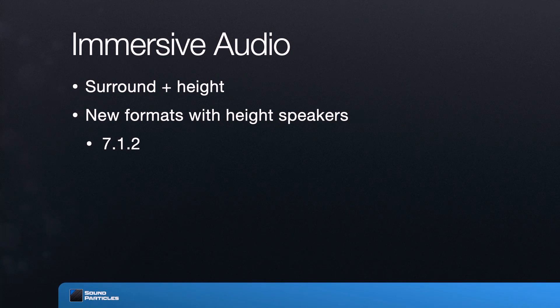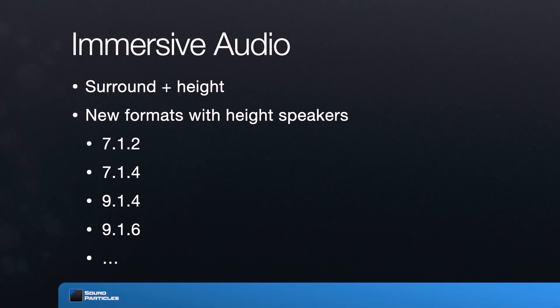We started with stereo — sound image in the front — then moved to surround with sound on the sides, back, and front. The next step is immersive audio. When people talk about immersive, 3D, or spatial audio, they mean surround with a height component — not only speakers around you in front, sides, and back, but also speakers above you. This allows you to explore sound coming from above, like a helicopter passing overhead. For example, 7.1.2 is the traditional 7.1 — three speakers in the front, four surround channels — plus two additional channels above you: a left and right ceiling speaker.